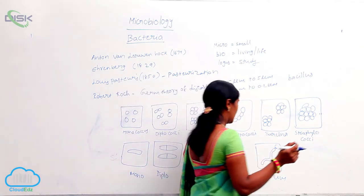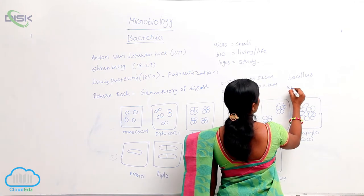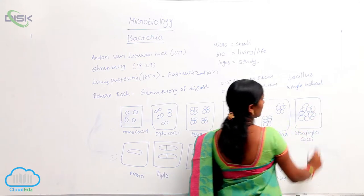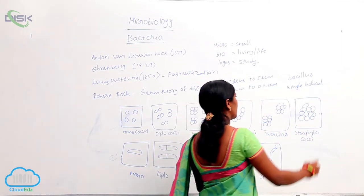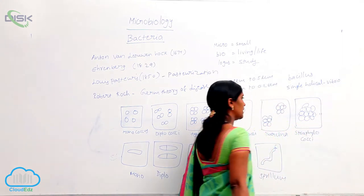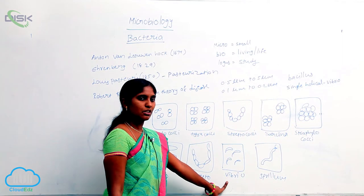A single helical form is also present in a few bacteria. They are called vibrio. Vibrio means comma-shaped bacteria.